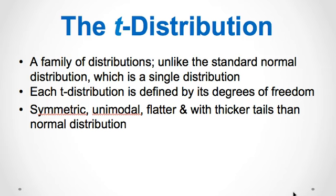The t-distribution is a family of distributions that look almost identical to the normal distribution. The t-distribution is flatter and has thicker tails than the normal distribution. The t-distribution is used instead of the normal distribution when you have smaller sample sizes, usually less than 30, and/or the population standard deviation sigma is unknown. The larger the sample size, the more the t-distribution looks like the normal distribution. For sample sizes larger than 30, or n greater than or equal to 30, the t-distribution is almost like the normal distribution. For sample sizes at infinity, n equal to infinity, the t-distribution is in fact the standard normal, or z-distribution.